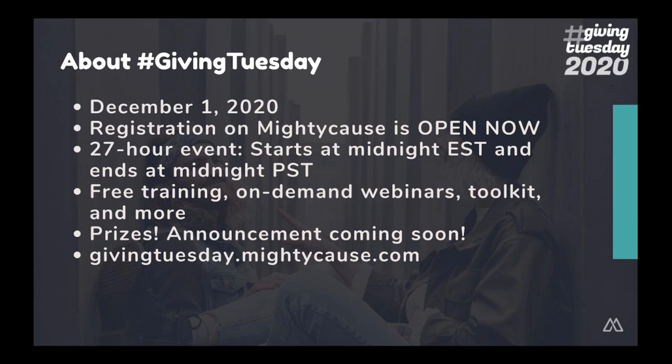This year, Giving Tuesday is on December 1st, and Mighty Cause hosts our own event. It's actually a 27-hour event — not just 24 hours. It starts at midnight on the East Coast and goes to midnight Pacific time, so you're actually getting 27 hours of fundraising. To participate on our platform, you do need to register, and registration is open now. Go to givingtuesday.mightycause.com and click the big register button. Every year organizations frantically call support on Giving Tuesday asking why they're not on the leaderboards — it's because they forgot to register. So get ahead of the game.